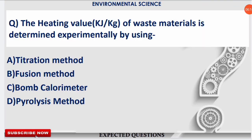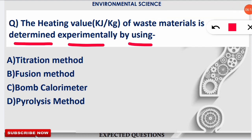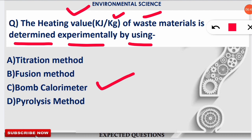The next question is: 'The heating value of waste material is determined experimentally by using which of the following methods?' Heating value is measured in kilojoules per kg — that is, how much energy is emitted per kg of waste burned. The correct option is option C: bomb calorimeter. Through the use of a bomb calorimeter, we can determine the heating value given in kilojoules per kg of waste material.